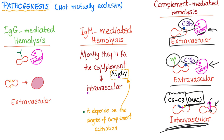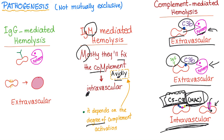IgM-mediated hemolysis depends on the degree of complement activation. If complement is activated avidly — meaning all the way through C5 to C9 — you reach the MAC and get intravascular hemolysis. Note: 'avidly' has an I, and 'intravascular' has an I. IgM mostly fixes complement avidly, so IgM-mediated hemolysis is predominantly intravascular.